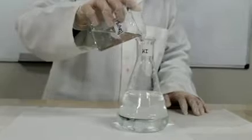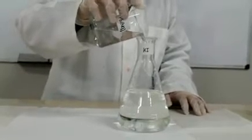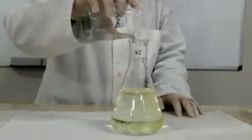First, a solution of lead nitrate is poured into a solution of potassium iodide. On mixing the two solutions, a yellow precipitate forms.